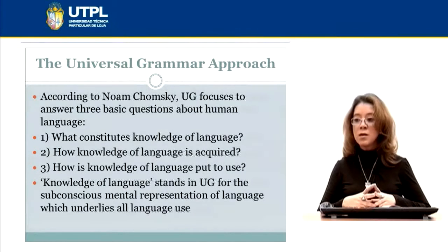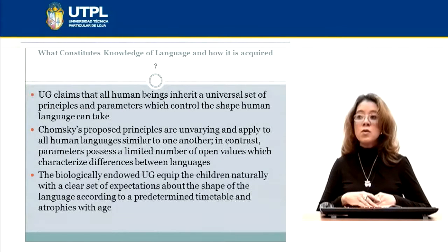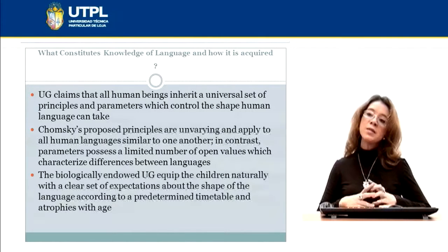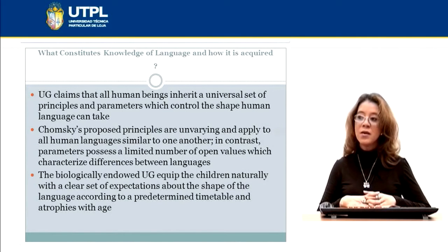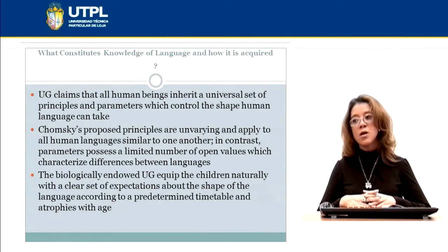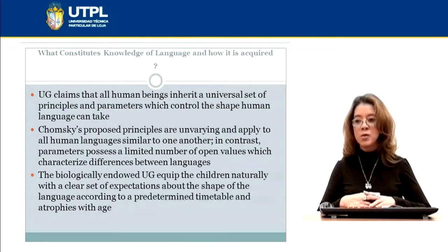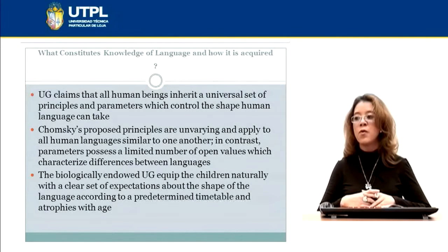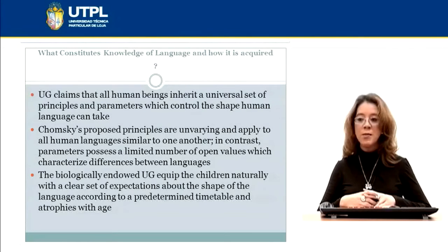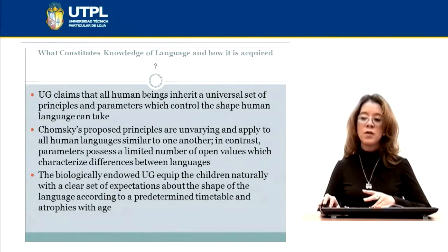Knowledge of language stands in universal grammar for the subconscious mental representation of language which underlies language use. Universal grammar claims that all human beings inherit a universal set of principles and parameters which control the shape human language can take. Chomsky proposed that principles are invariable and apply to all human languages, while parameters have a limited number of values which characterize differences between languages. The biologically endowed universal grammar equips children naturally with a clear set of expectations about language according to a predetermined timetable, and it atrophies with age.